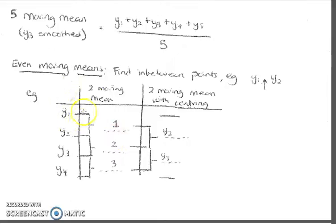If we're doing a two moving mean, we take the average of two points and this data point falls in between these two. The two moving mean falls between Y1 and Y2. If we want to center these points, we then take the average again of these values. We've got our average of Y1 and Y2 and Y2 and Y3. We take the average of these two values to center it.